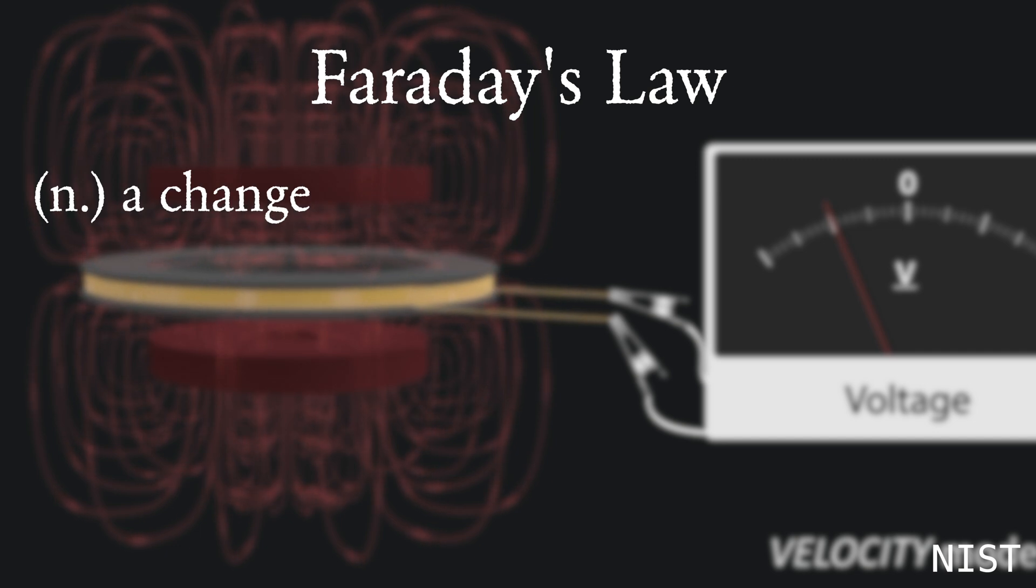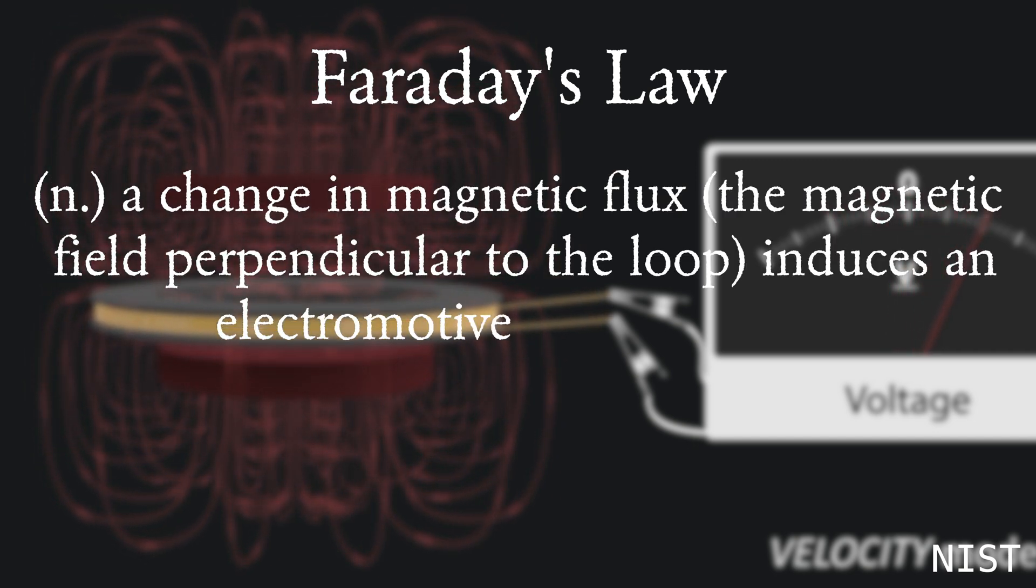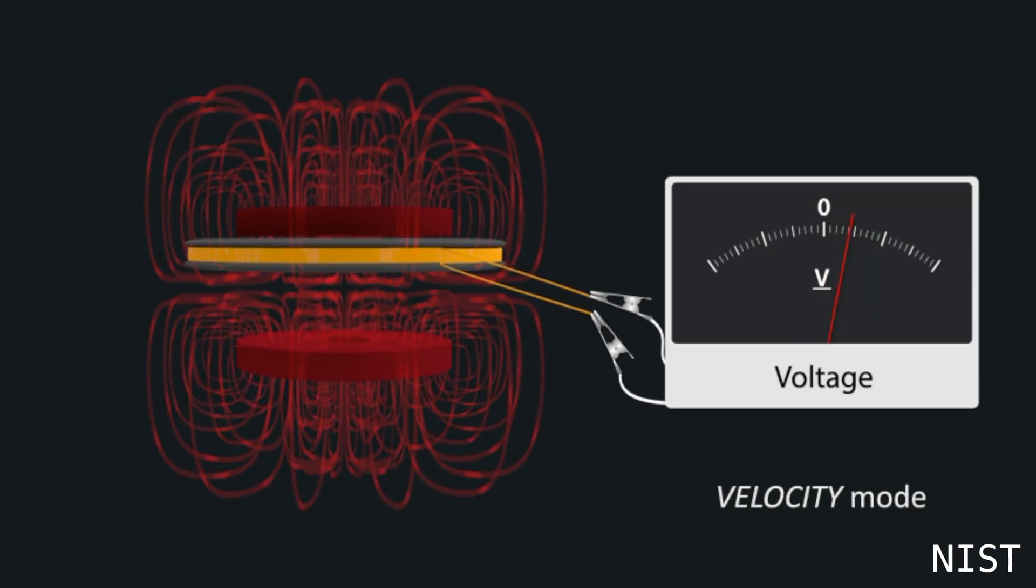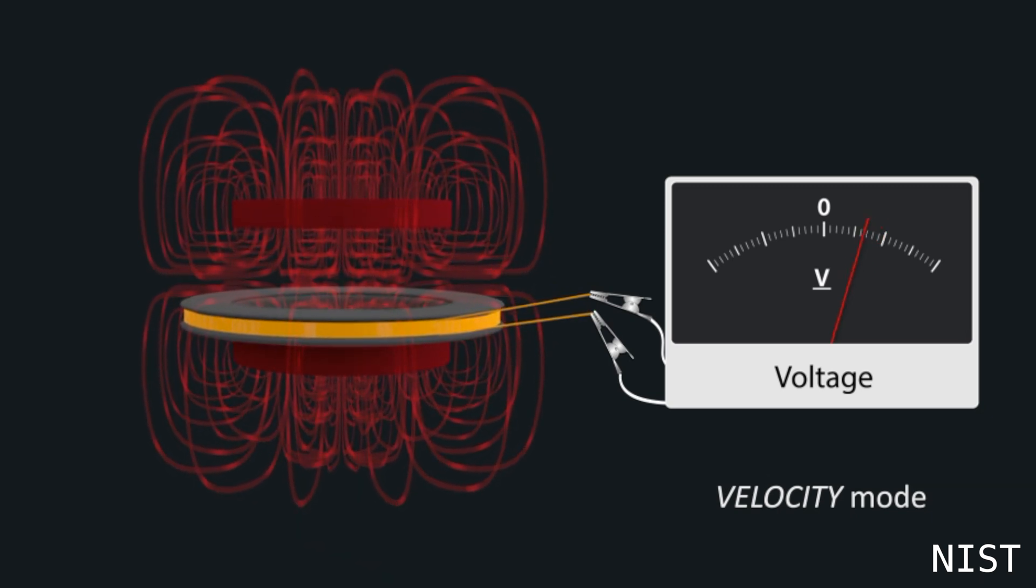By Faraday's law, the change in flux, that is the amount of magnetic field lines going straight through the loop, induces an electromotive force, a voltage. Now the velocity is adjusted in hundreds of trials to find what velocity induces exactly the same voltage they found in weighing mode.